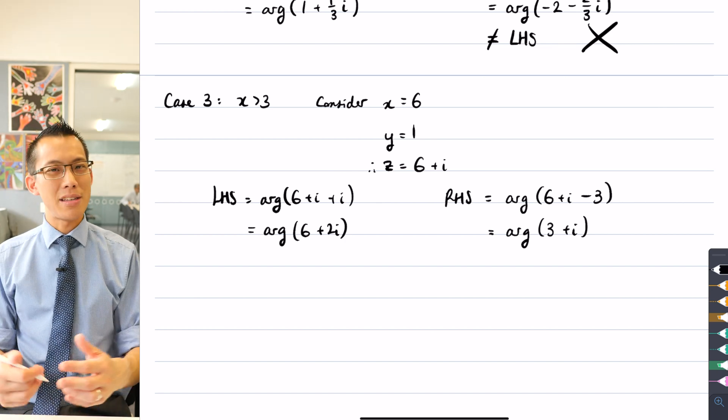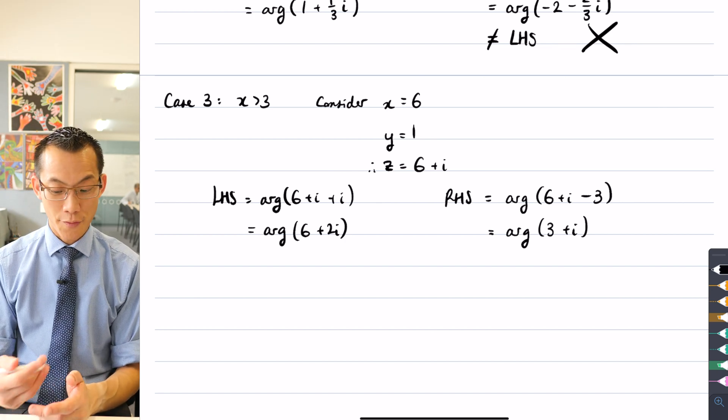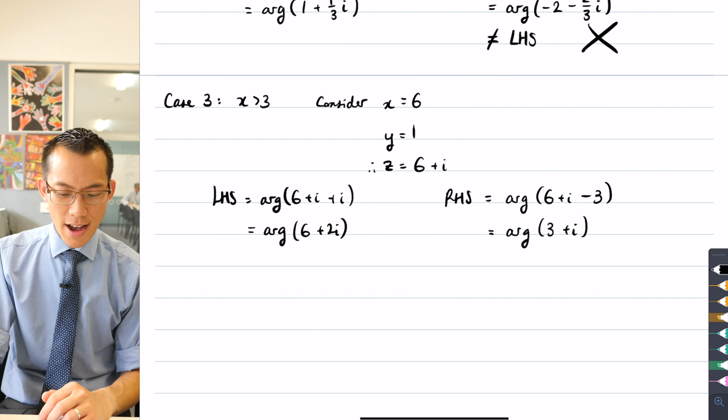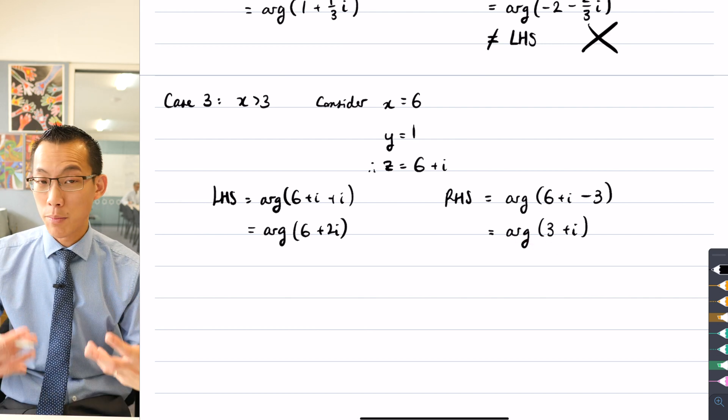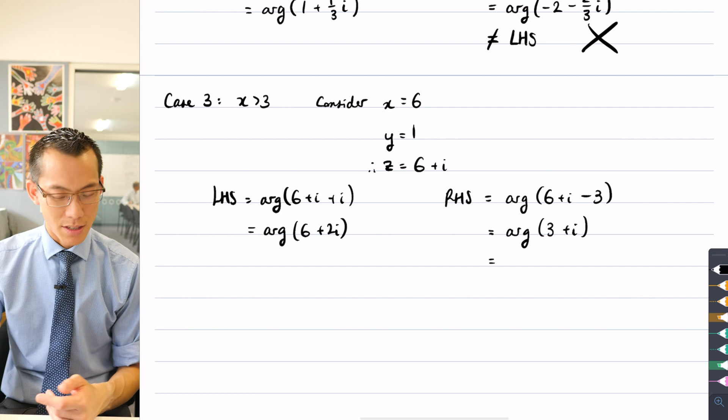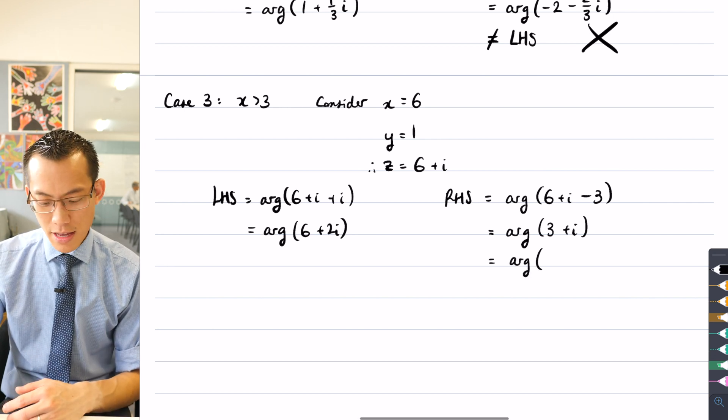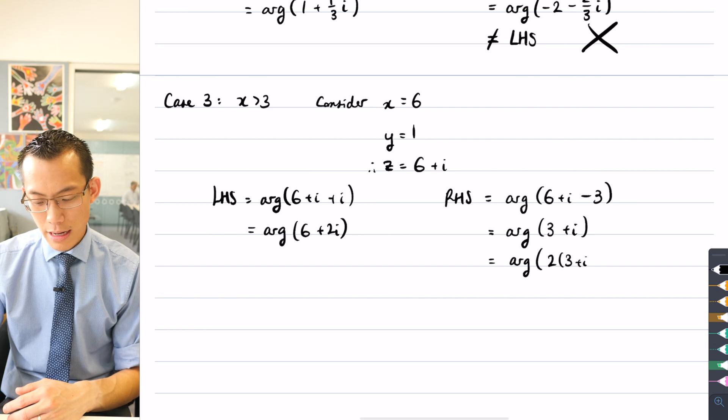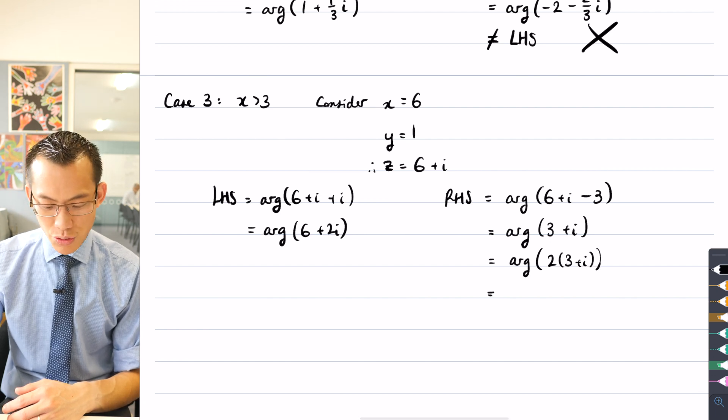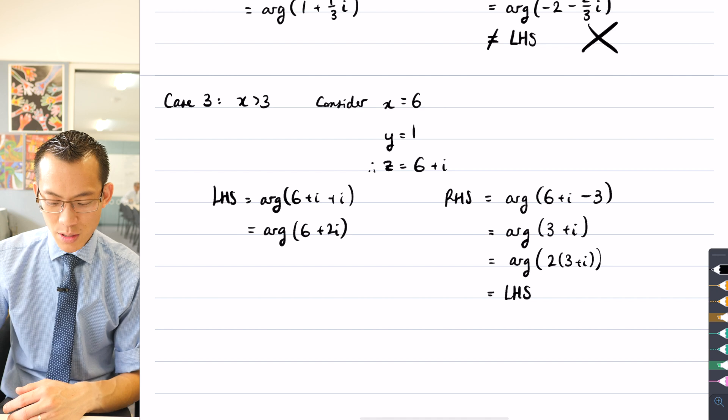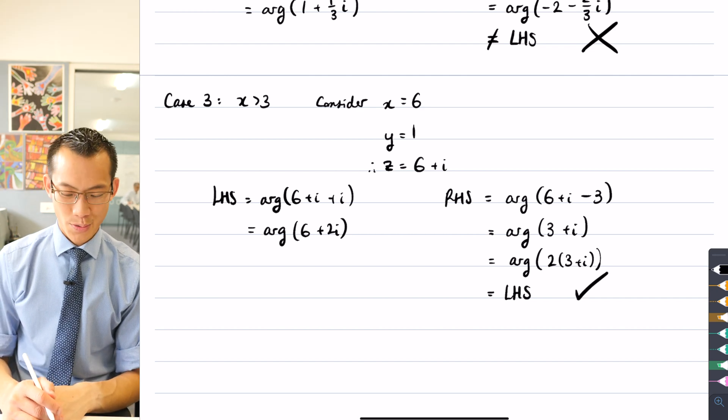But I can employ the same trick that I did in the first question, just in reverse, right? This argument here, if I multiply this by a real number, the argument doesn't change. So therefore, the argument of three plus i is the same as the argument of two times three plus i, which is indeed what you have on the left hand side. So this is also true.